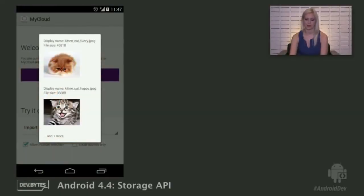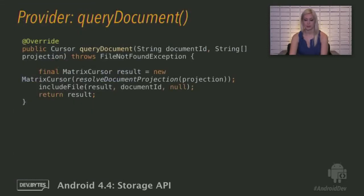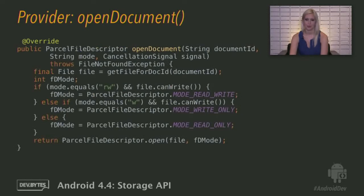So, QueryDocument. One or both of QueryDocument or OpenDocument will get called when the user selects a document. QueryDocument returns the same information that was passed in QueryChildDocuments, but just for that specific file. OpenDocument returns a ParcelFileDescriptor, which another application can use to stream data. You can see that we're setting the access mode, and the system takes care of issuing URI permission grants for us.